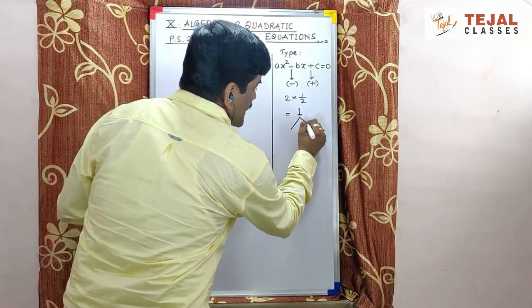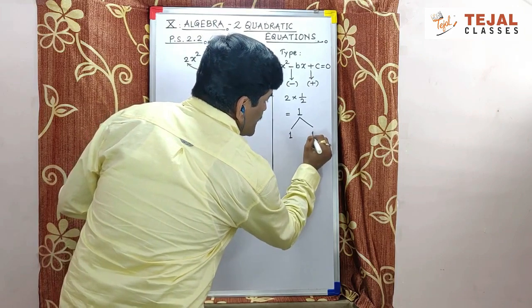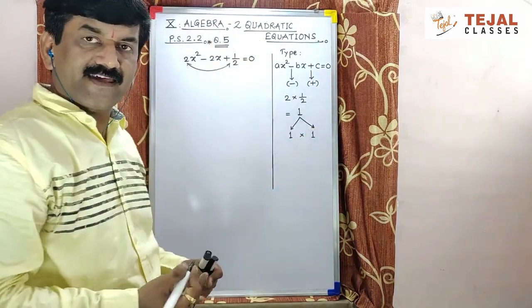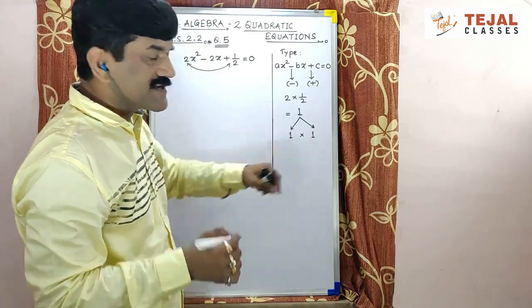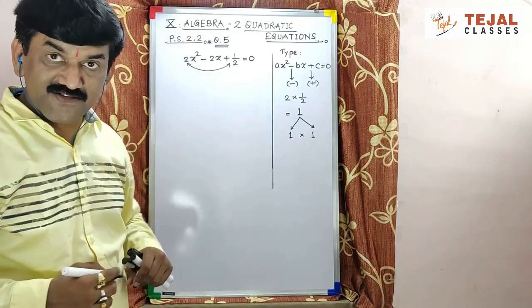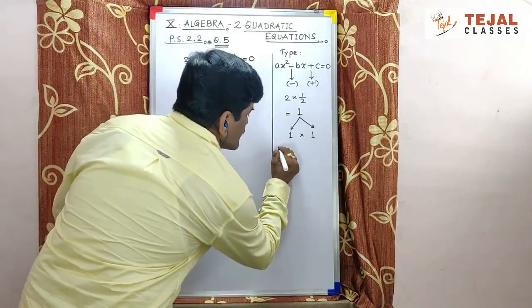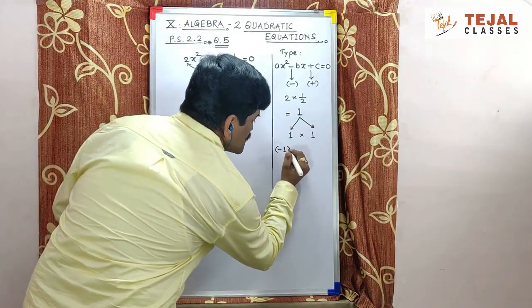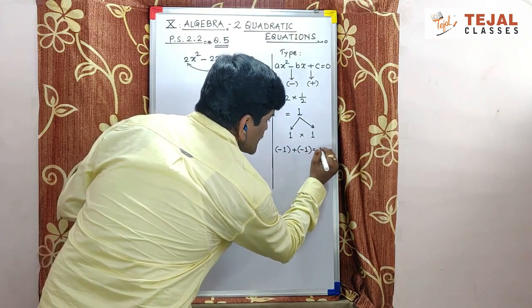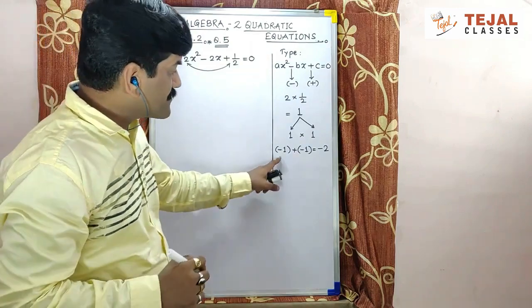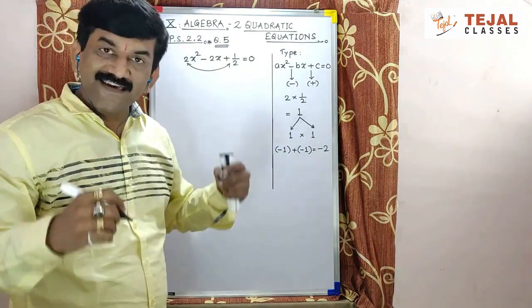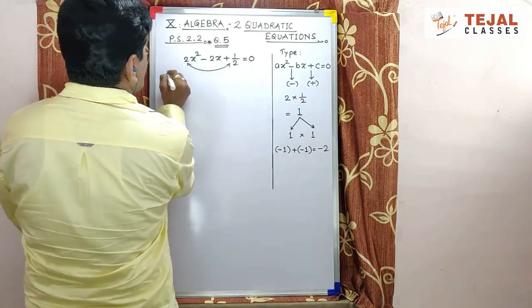We can factorize this 1 like this: 1 into 1. Ho gaya mera factors. Kyunki 1 aur 1 ka total kitna aata hai? 2 aa gaya. But yaha pe to minus 2 hai. To obviously, yaha pe bhi aise hoga minus 1 plus minus 1 which is equal to minus 2 and their product is equal to plus 1.